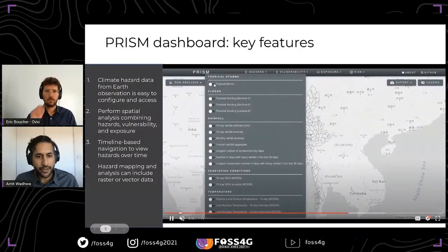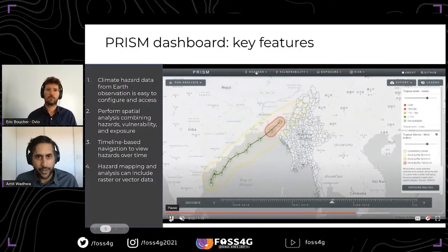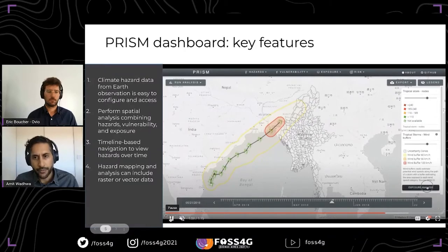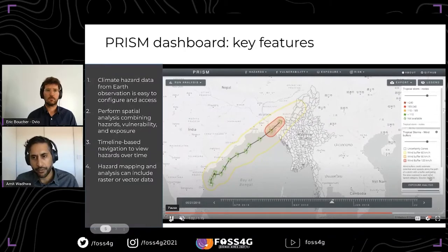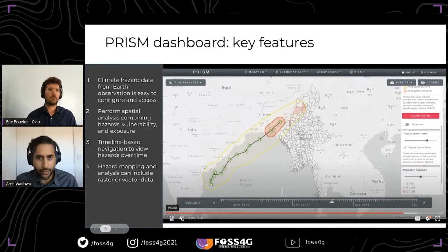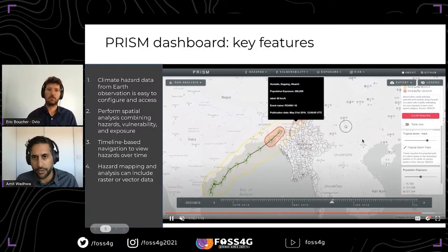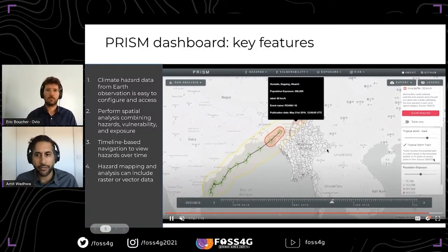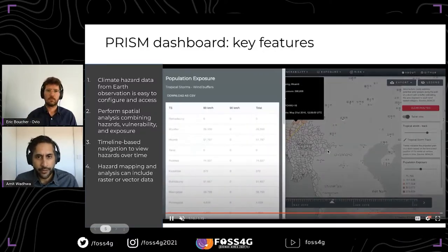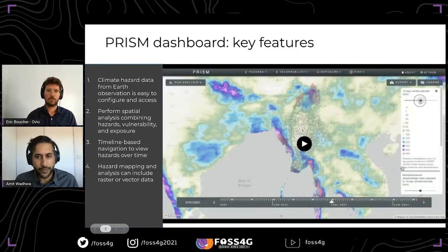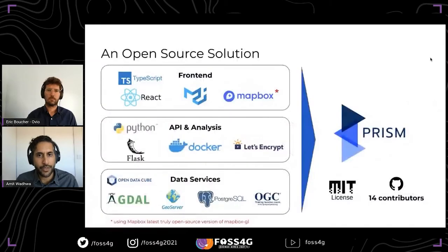We've also started to integrate different types of hazard data including those based on vectors — this is a tropical storm layer coming into PRISM. We can do what's called an exposure analysis, looking at a population raster data set from WorldPop and combining that with the path of the storm to look at the distribution of population potentially affected. That can also be displayed as a table view. That's a very quick overview of what the platform looks like.